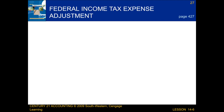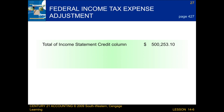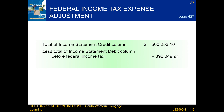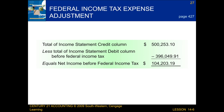When we calculate the federal income tax expense adjustment, there are many steps that we have to follow in order to complete this process. First, we take the total of the income statement credit column and subtract it from the total of the income statement debit column before federal income tax. Once the two numbers have been subtracted, that will give us the net income before federal income tax.